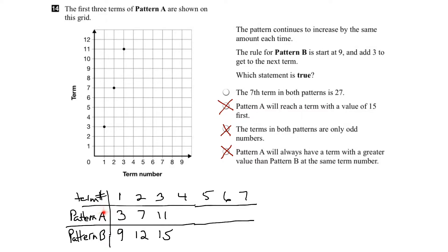For Pattern A, we start at 3, up to 7, then to 11. That means we're going up by 4 each time. We can see it here: 1, 2, 3, 4. So if we extend this pattern, the next term would be 15.